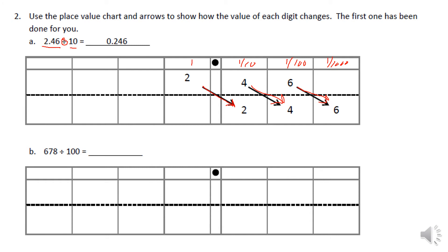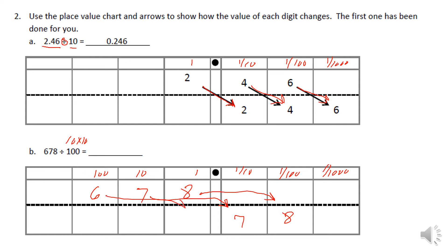We ended up with 0.246 thousandths. In part B, we're dividing, so the number will get smaller. The number is 678 divided by 100. Since 100 is 10 times 10, that equals two place values of movement. The 8, the 7, and the 6 each move two place values, giving us 6 and 78 hundredths.